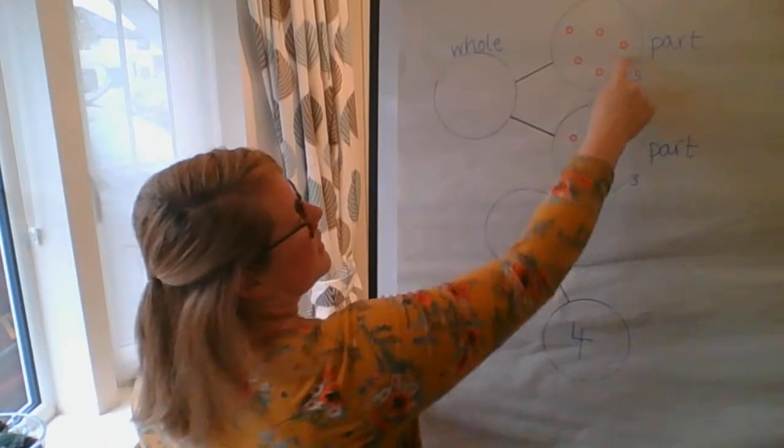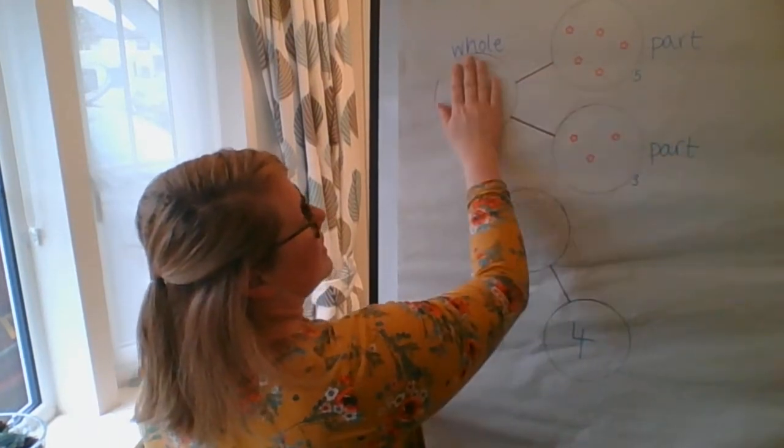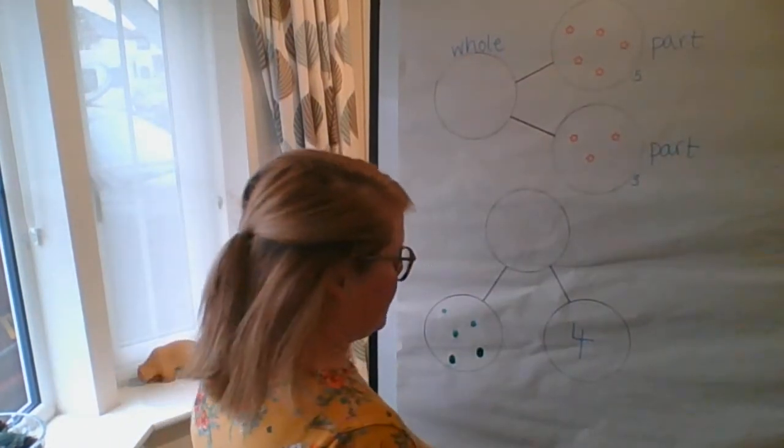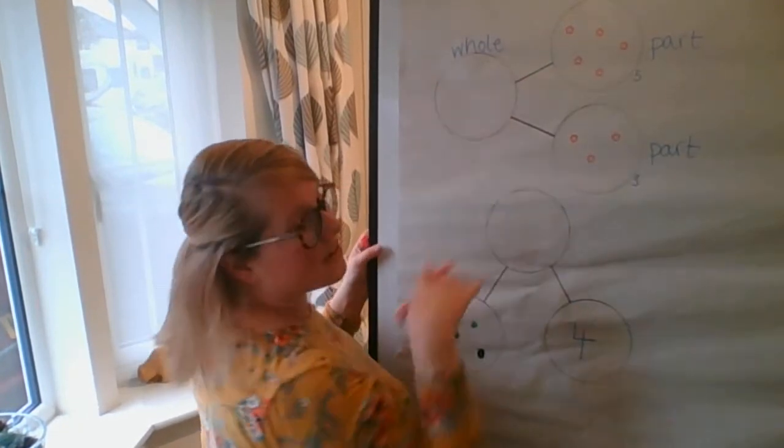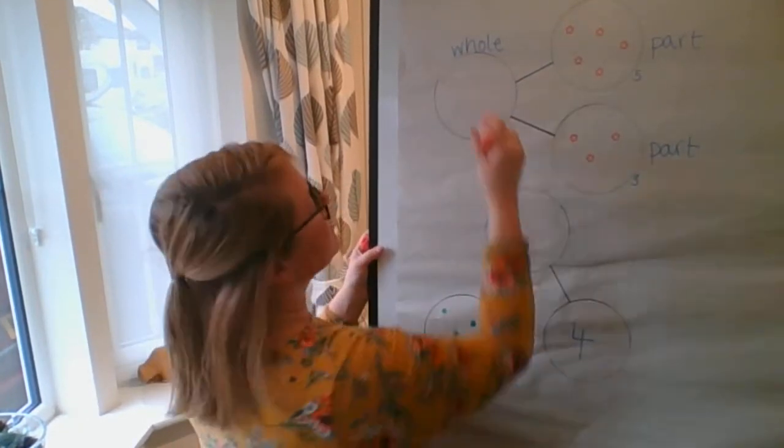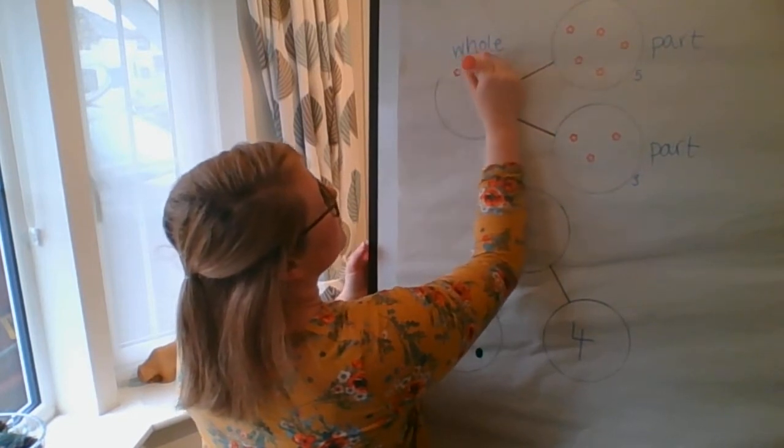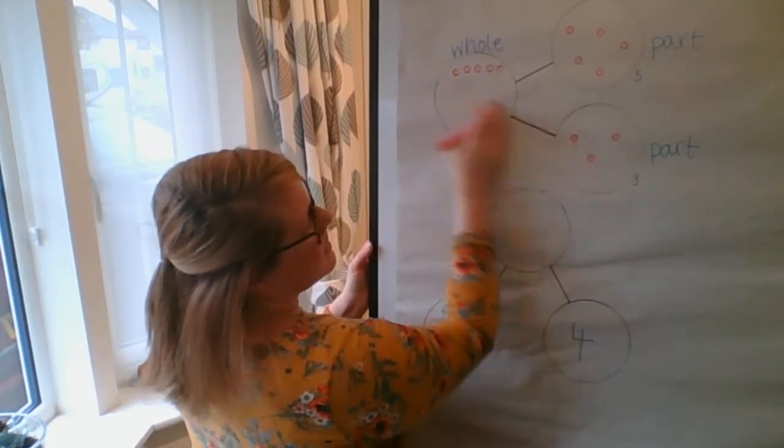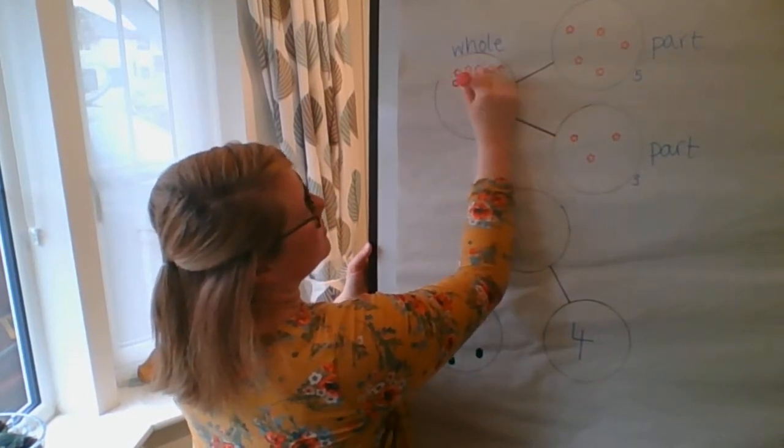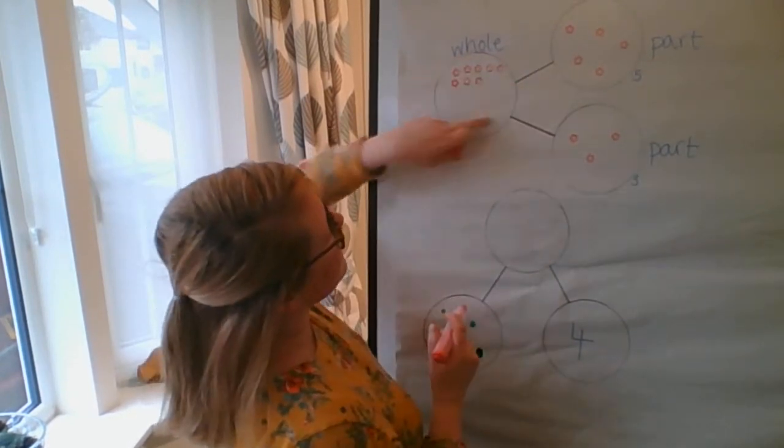So I need to add these two amounts together to make the whole. Now the first step in doing this is I could draw them in to help me, and then I can count and work the total. So I can say one, two, three, four, five. That's that part. And then I can take in that part. One, two, three. And then I can count the total.